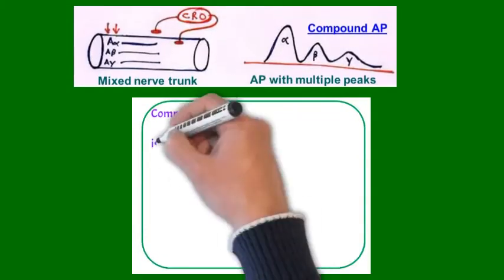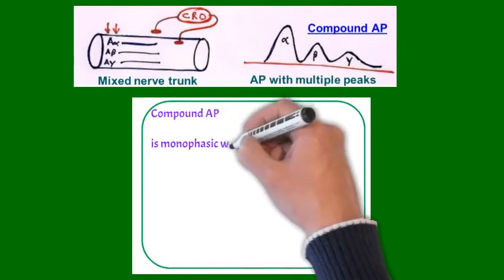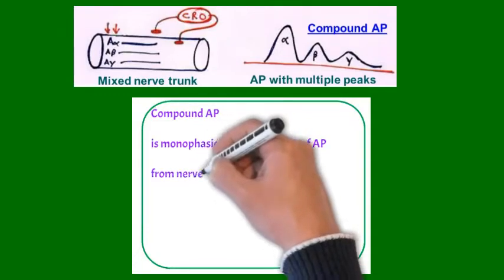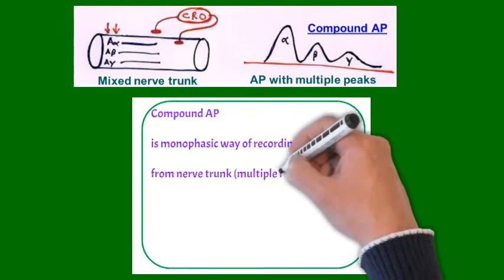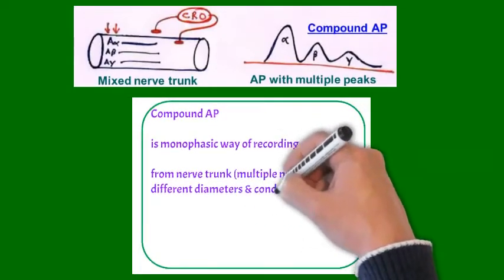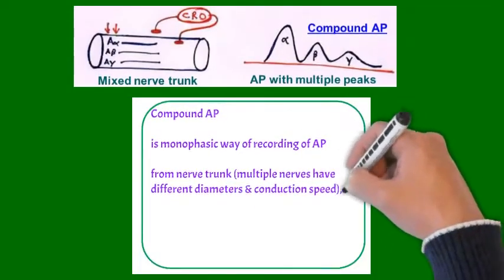In compound action potential, way of recording is like monophasic, but it is recorded by nerve trunk. In the nerve trunk, we are having multiple nerve fibers with different diameters and conduction velocity.